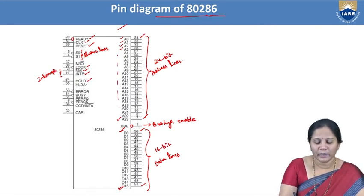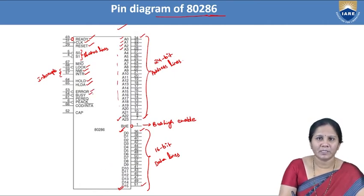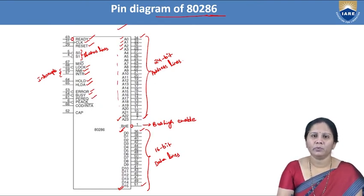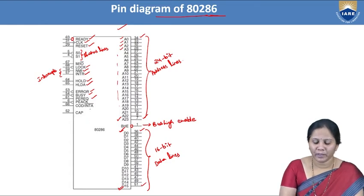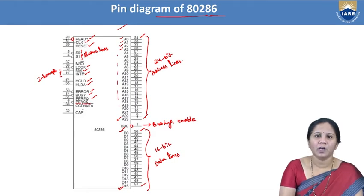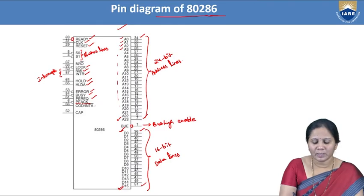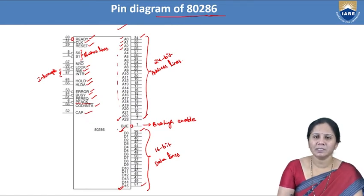Other signals include HOLD and HOLD acknowledgement, ERROR, BUSY, PE REQ (Processor Extension Request), PE ACK (Processor Extension Acknowledgement), and COD/INTA (Code/Interrupt Acknowledgement). CAP represents capacitance. The PE REQ and PE ACK signals exist because from the 80286 onward, a coprocessor can be present alongside the main processor.